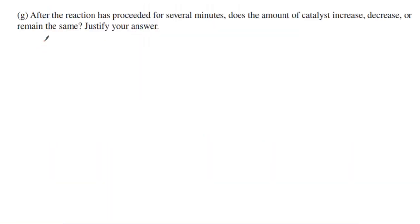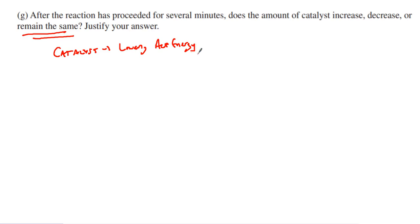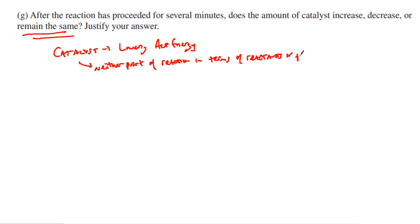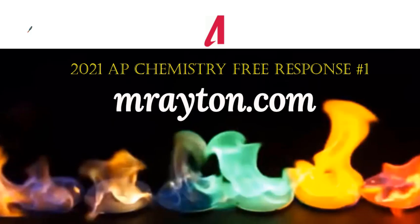The last part, G, asks: after the reaction proceeds for several minutes, does the amount of catalyst increase, decrease, or remain the same? The catalyst always remains the same. All a catalyst does is speed up the reaction by lowering the activation energy. The catalyst is neither a reactant nor a product, so the amount remains the same. And that is the 2021 AP Chemistry free response question number one. Hope this helped — check out MrAiden.com or my YouTube channel for more AP Chemistry help. Thanks, guys!